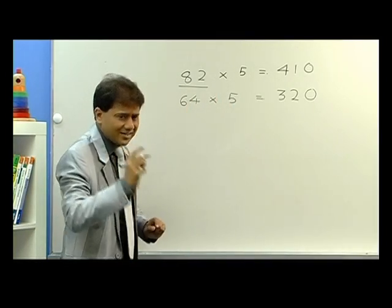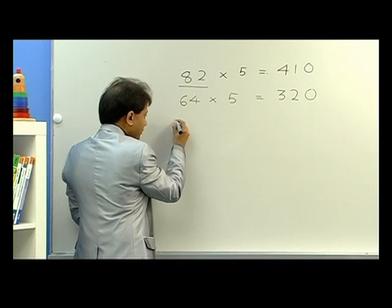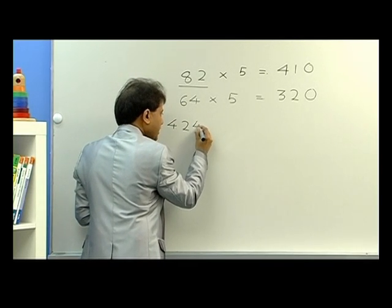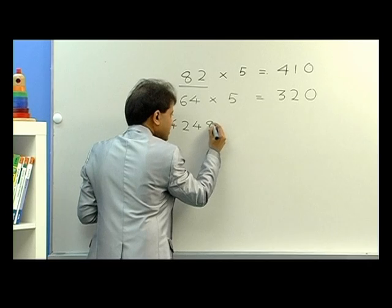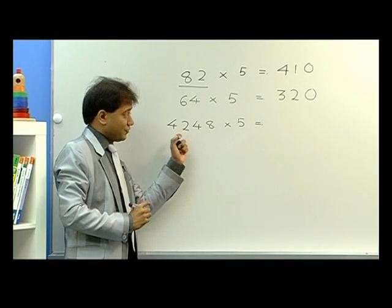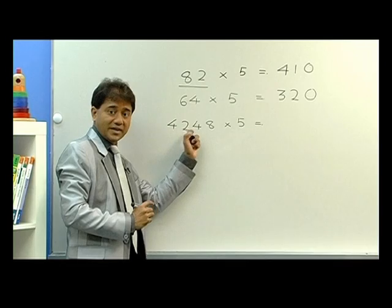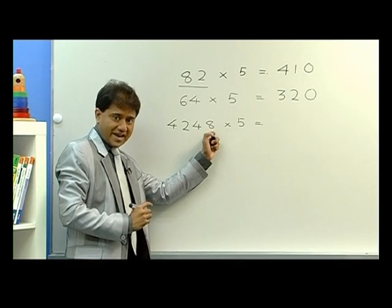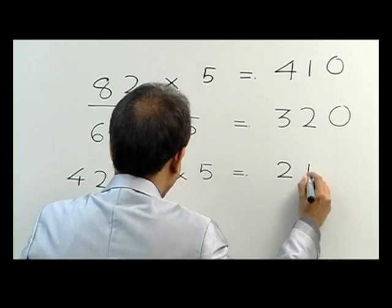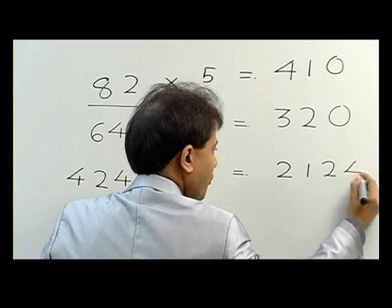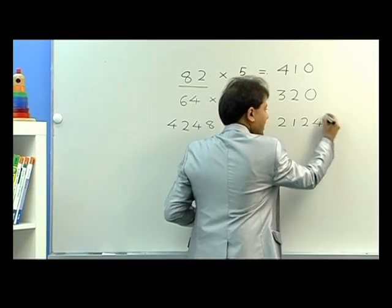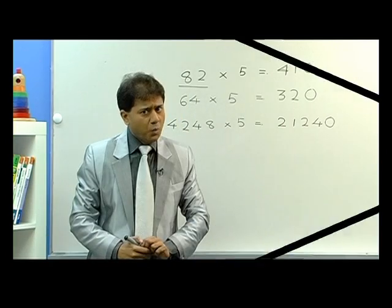Let's take a slightly bigger number: 4,248 times 5. Half of 4,248 becomes 2,124. And as I told you, just put a zero at the end. This is your answer.